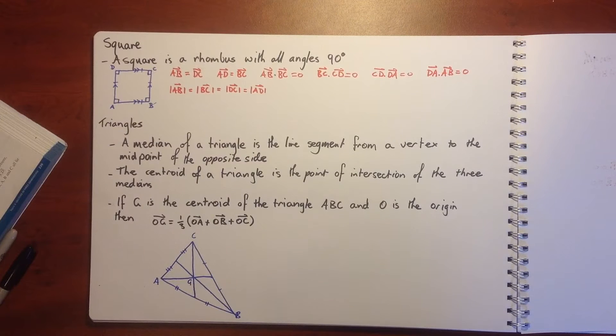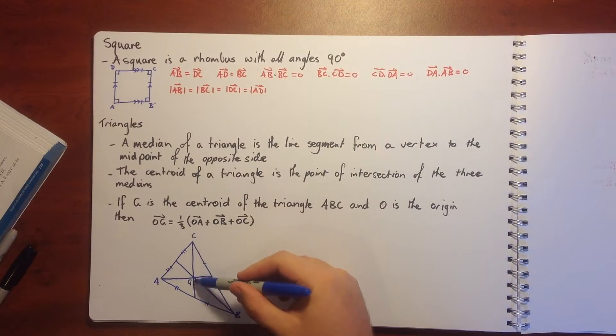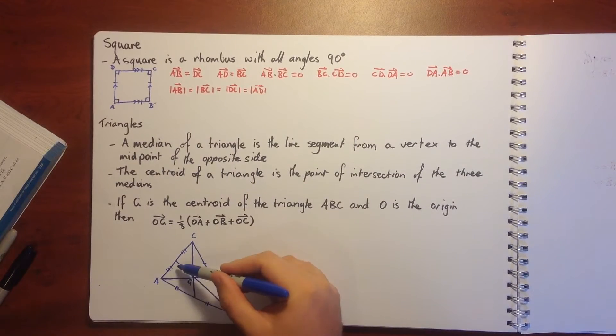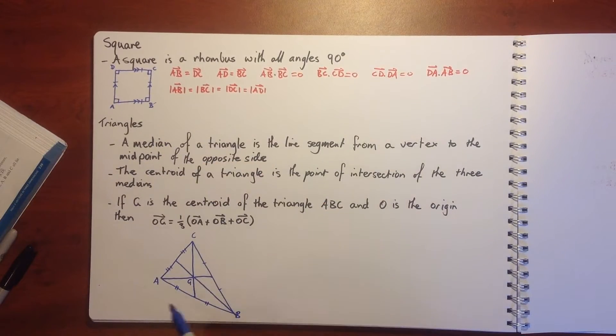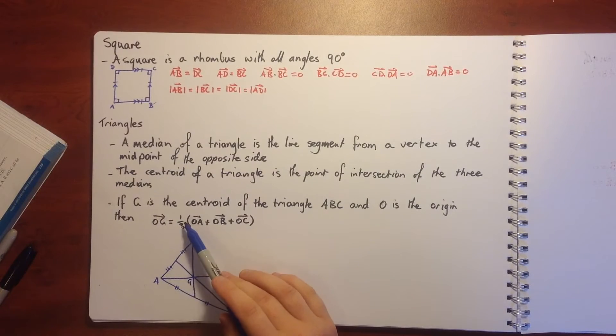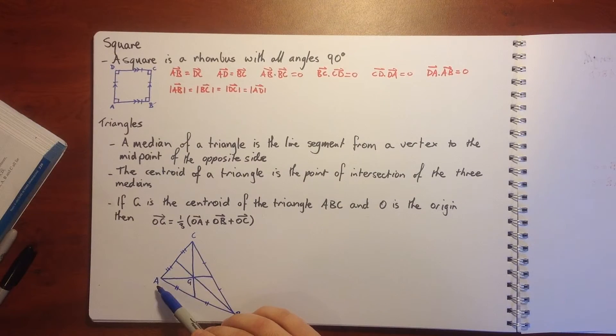For triangles, a median of a triangle is a line segment from a vertex to the midpoint of the opposite side. The centroid of a triangle is the point of intersection of the three medians. In this example, G is the centroid of triangle ABC, and O is the origin. The origin could be anywhere. Then the distance from the origin to G is equal to a third of the distance from the origin to A plus O to B plus O to C.